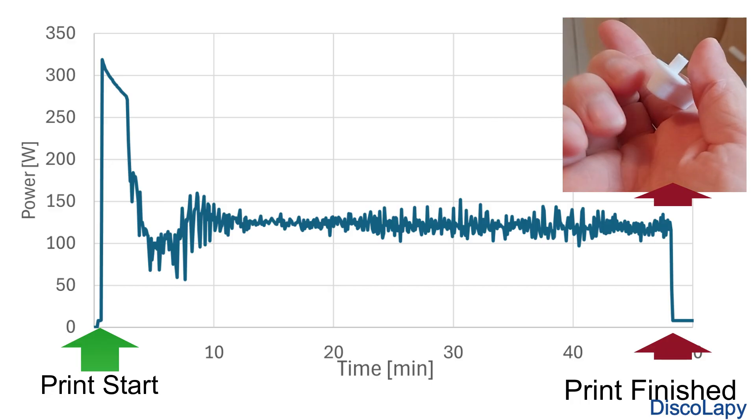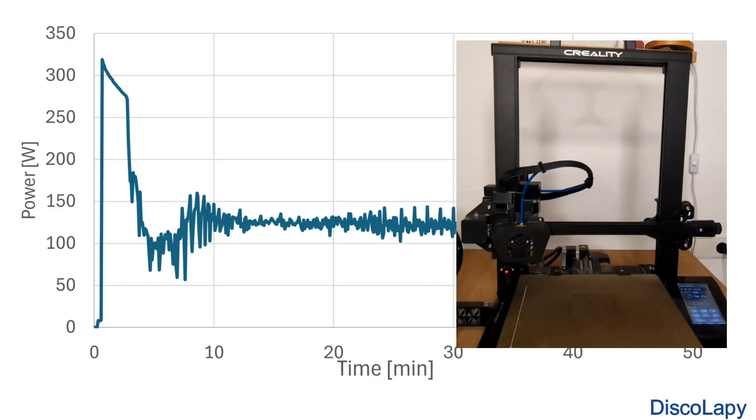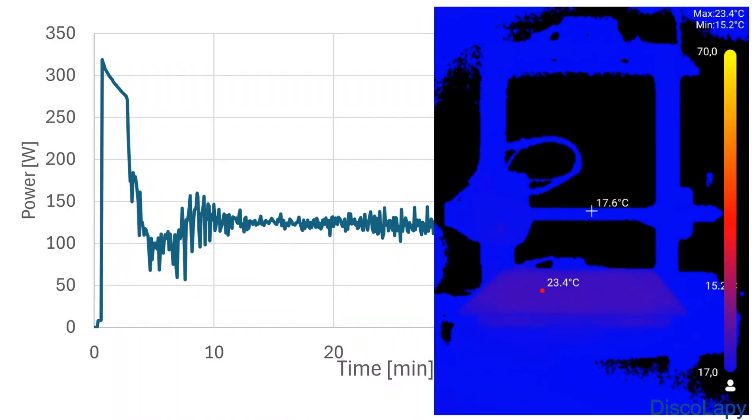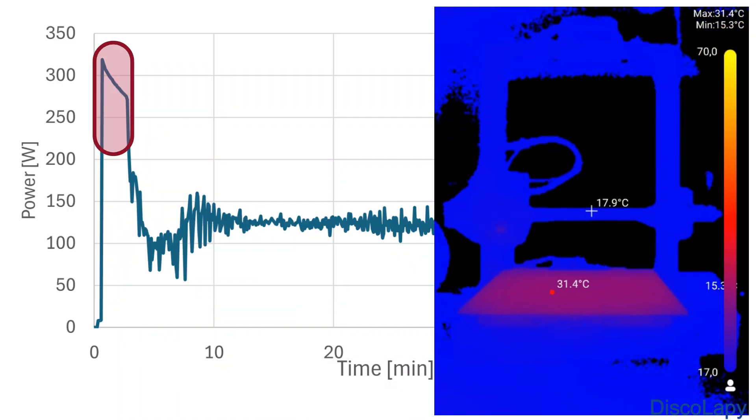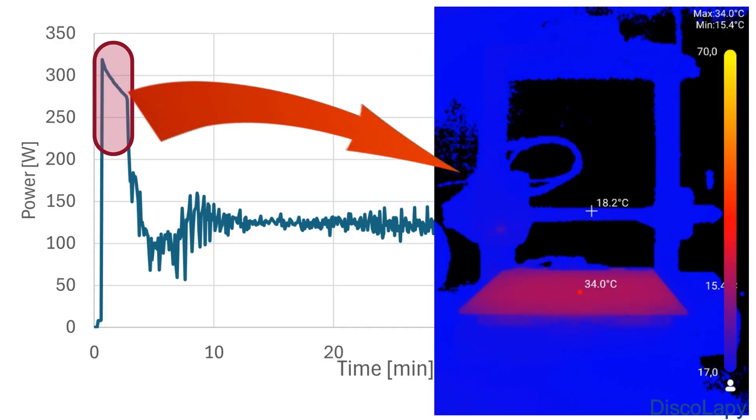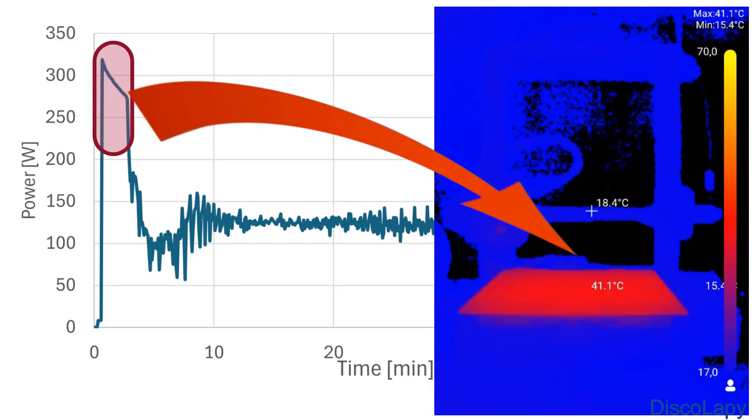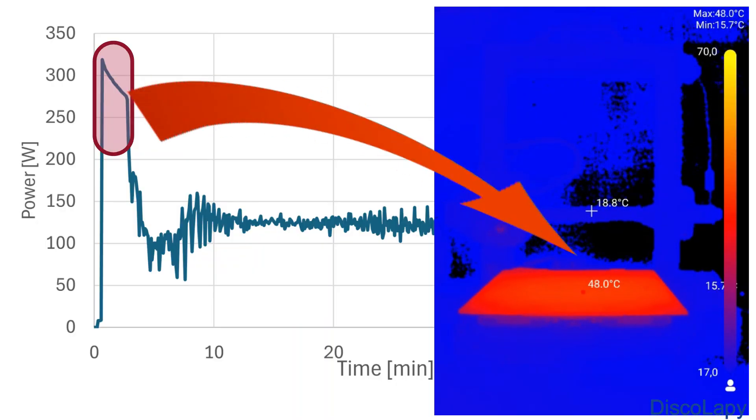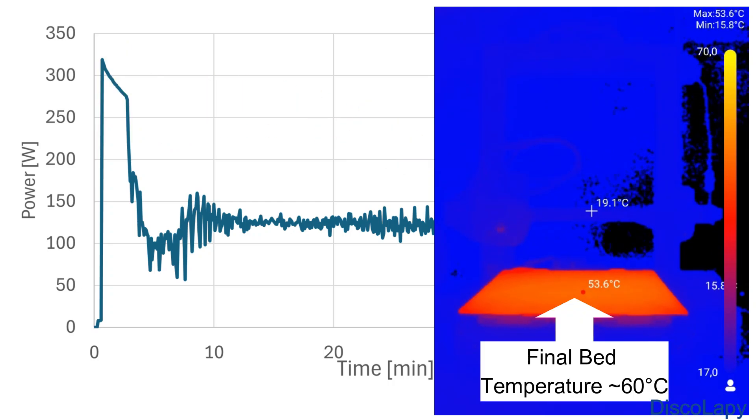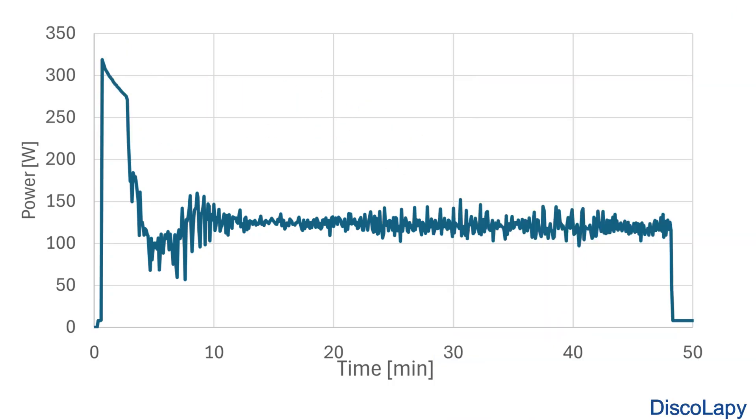Initially the heated plate warms up from room temperature to about 60 degrees celsius and during this phase the printer draws around 300 watts as this large peak at the beginning. The bed is a metal plate so it needs a lot of power to heat up quickly and practically all that power is used as sensible heat in the plate itself and a small part is already lost to the surrounding air by convection.